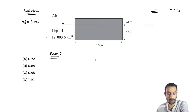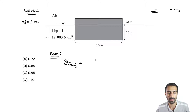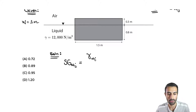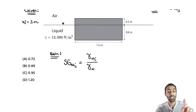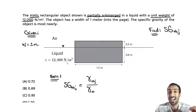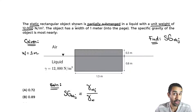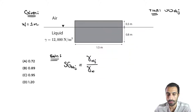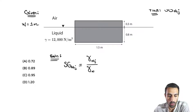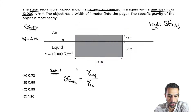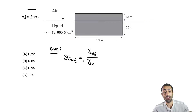So the specific gravity of the object equals the unit weight of the object — the unknown we need to find — divided by the unit weight of water, which in SI units at standard conditions is 9,810 newton per cubic meter. Unless the problem specifies a temperature, always assume standard conditions.